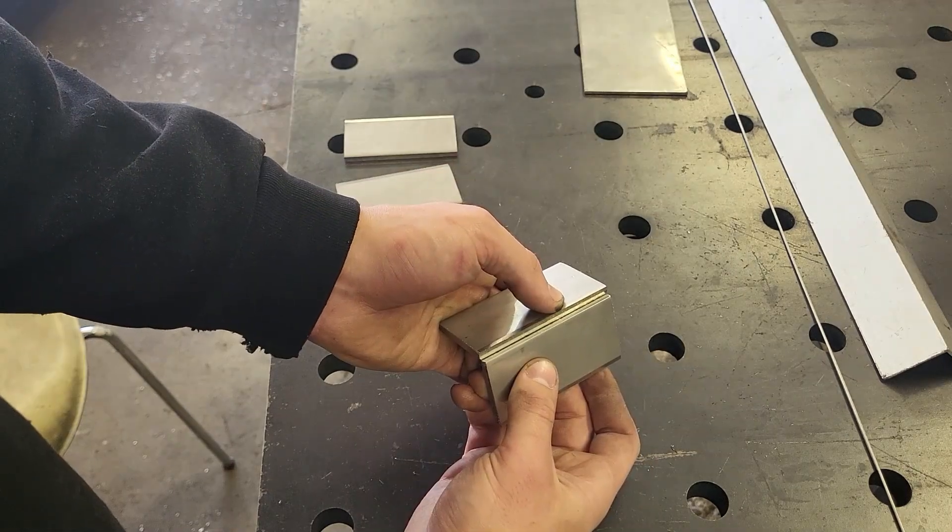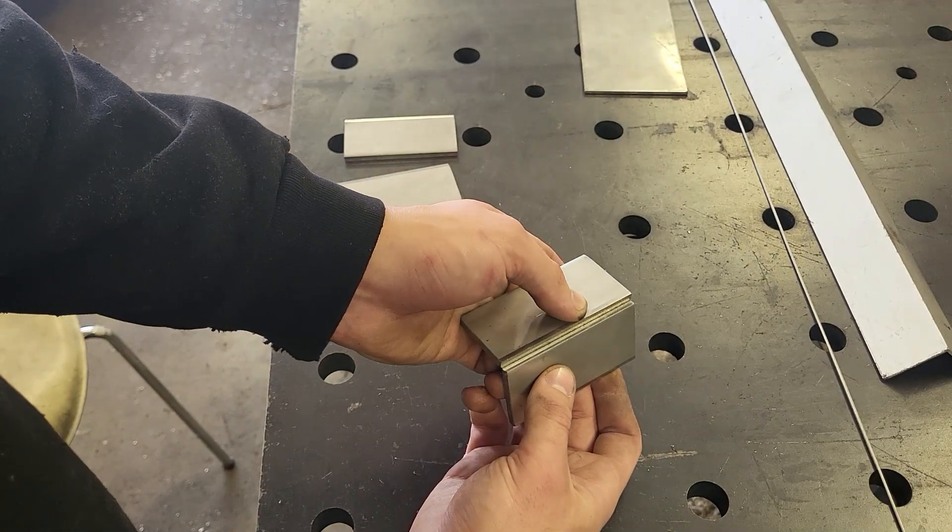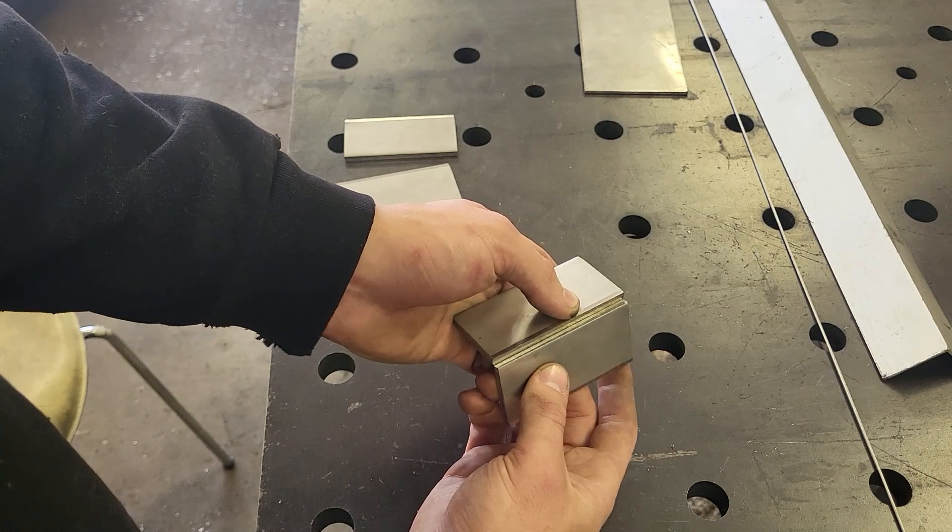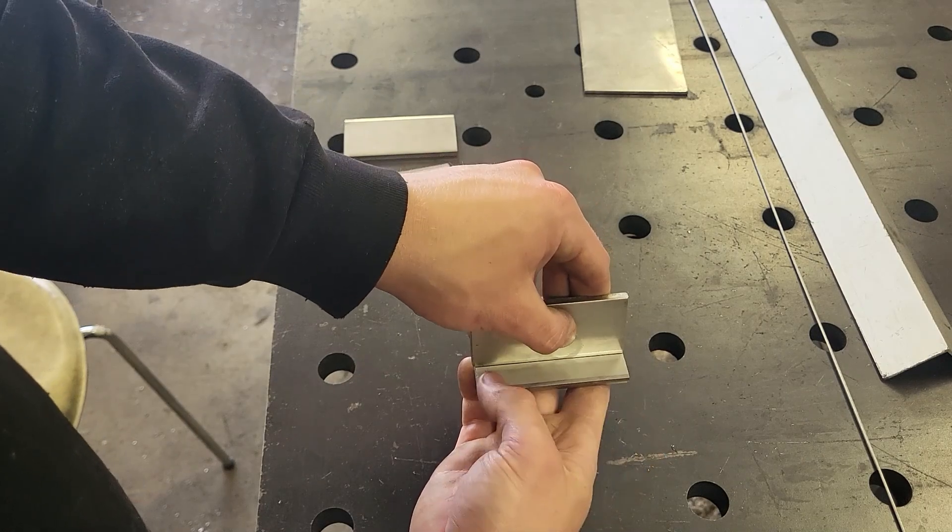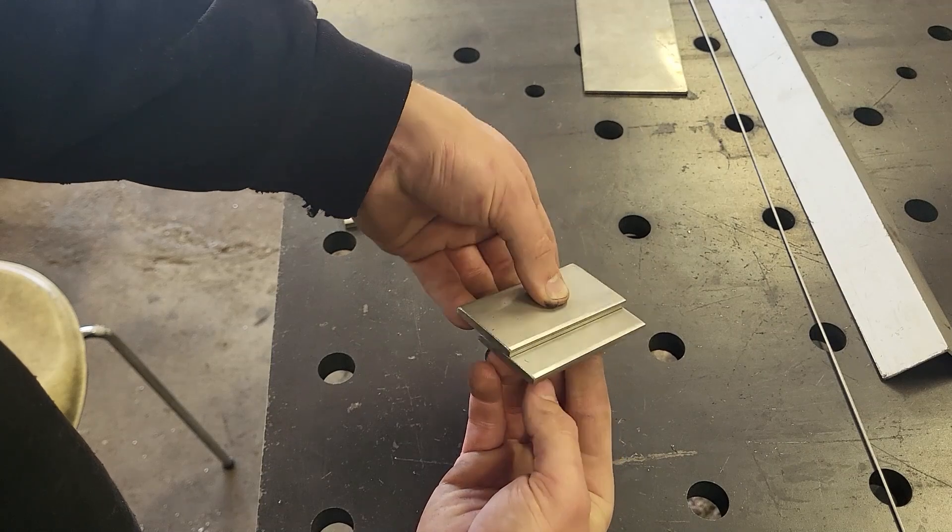In today's lesson, I'll be showing you three typical joints. The first one is an outside corner joint. The next one is a T-joint or an inside corner joint. And the last one is a lap joint.